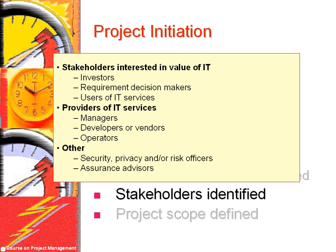Project managers must communicate to different groups of stakeholders. At least three broad groups can be recognized in information technology projects: stakeholders interested in the value of IT investment, including those who make investment decisions, employees that decide about requirements, and customers or employees who use IT services. Another group includes employees who provide these services — managers, developers, and operators. Finally, there is a group of IT professionals focused on security, privacy, and assurance services. These stakeholders might be internal or external to the organization.